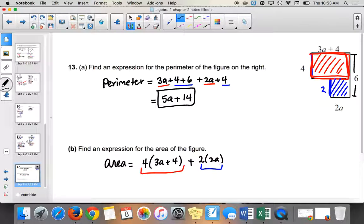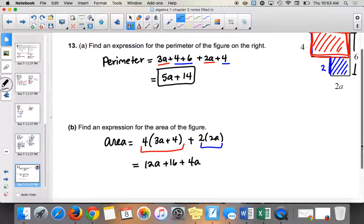So if I simplify this expression, Peter's right. We have 12a plus 16, and then we have plus 4a. So our final result, combine your like terms. We have 12a plus 4a. So 16a plus 16. And that is our answer.